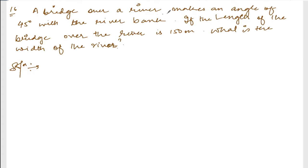A bridge over a river makes an angle of 45 degrees with a riverbank. If the length of the bridge over the river is 150 meters, what is the width of the river?